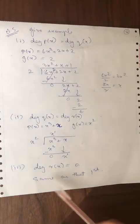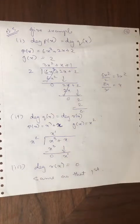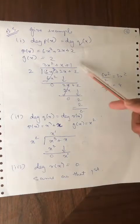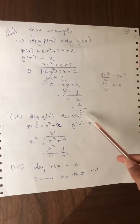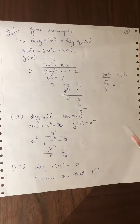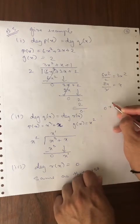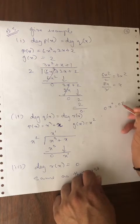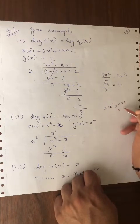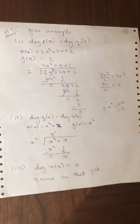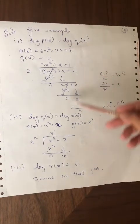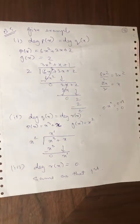Last example: degree of r(x) = 0. The remainder's degree should be 0. You can reuse the first illustration where the remainder was 0. The degree of 0 is 0, because 0 = 0 × x⁰ = 0 × 1 = 0. So the degree of 0 is also 0. You can repeat the first question's example here. This completes chapter number 2 of your 10th standard polynomials. Thank you.